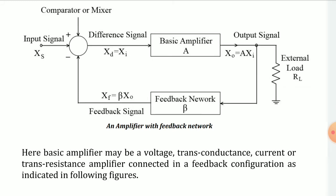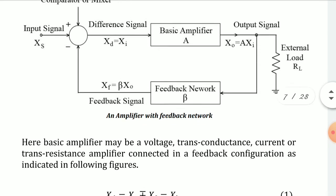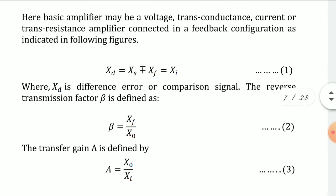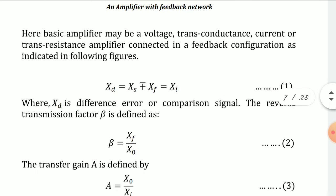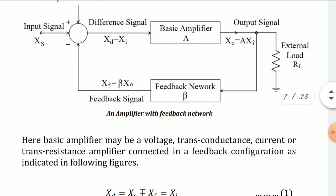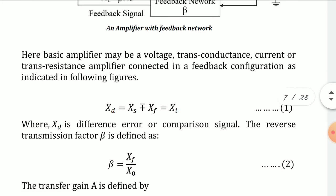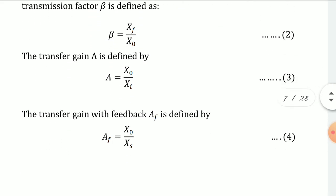Now, the transfer gain with feedback means the end-to-end gain: at the output we have X_O and at the input we have X_S. So the gain with feedback, A_F, equals X_O divided by X_S. Mark this as Equation 4. We will now use Equations 1, 2, and 3 to derive this.